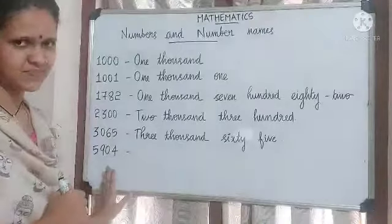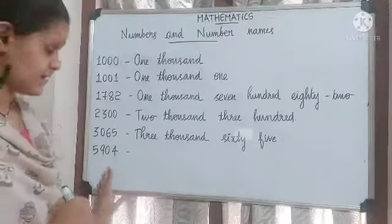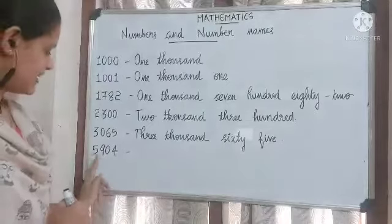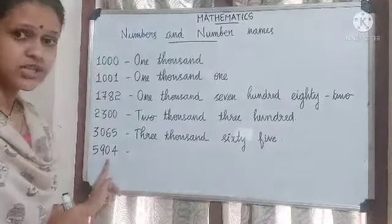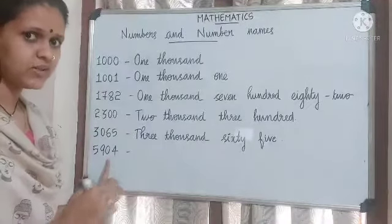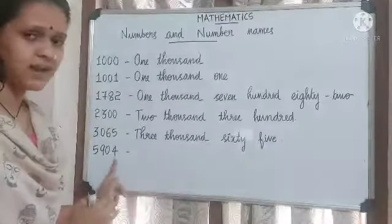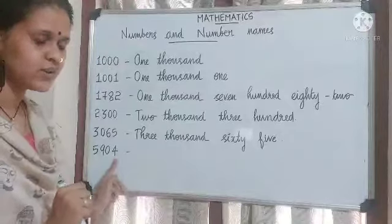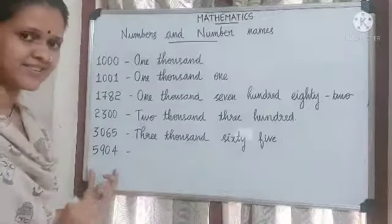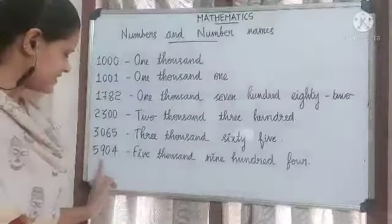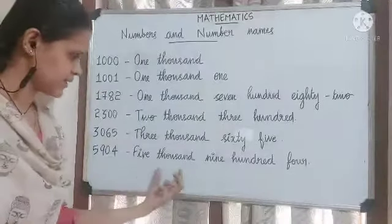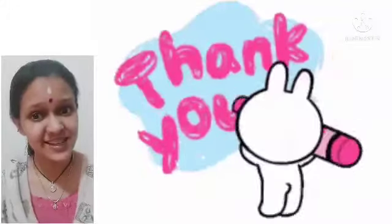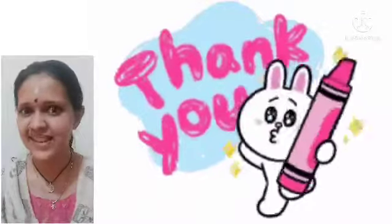Let's read one more four-digit number. This is the number — how can we read it? It starts with 5,900. The digit in the tens place is 0, so we skip that. The last digit is 4. So the number is 5,904. That's all for today's class. Thank you and have a great day!